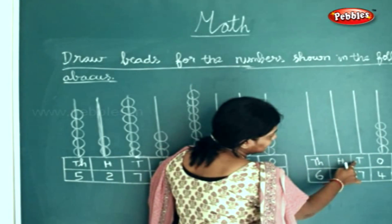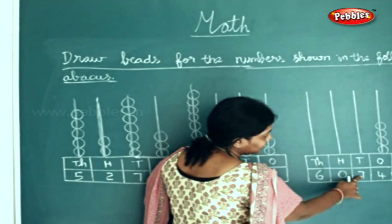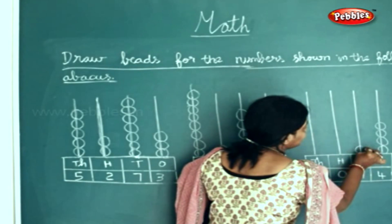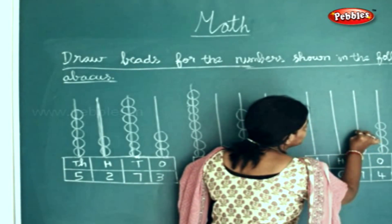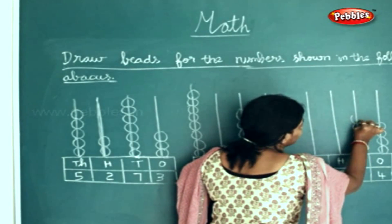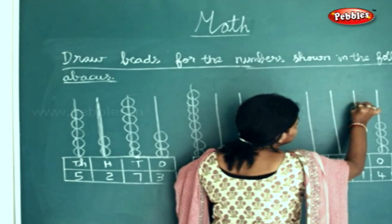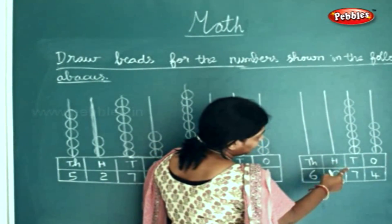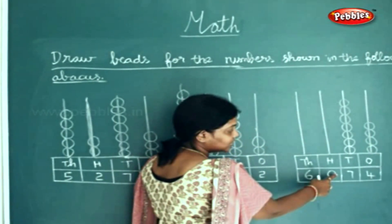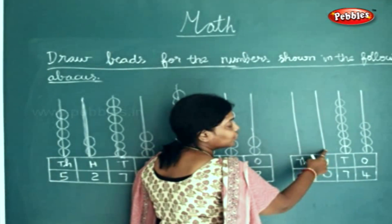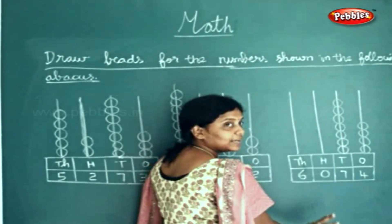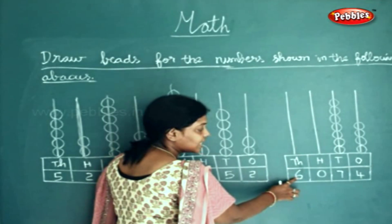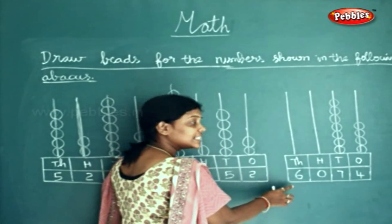So in the 10s place, how many numbers do you see? 7. So how many beads will you draw? 1, 2, 3, 4, 5, 6, 7. In the 100s place, what number do you see? You see 0, so you won't draw anything here — just leave the place like that. In the 1000s place you see number 6, so how many beads will you draw? You will draw 6 beads here.